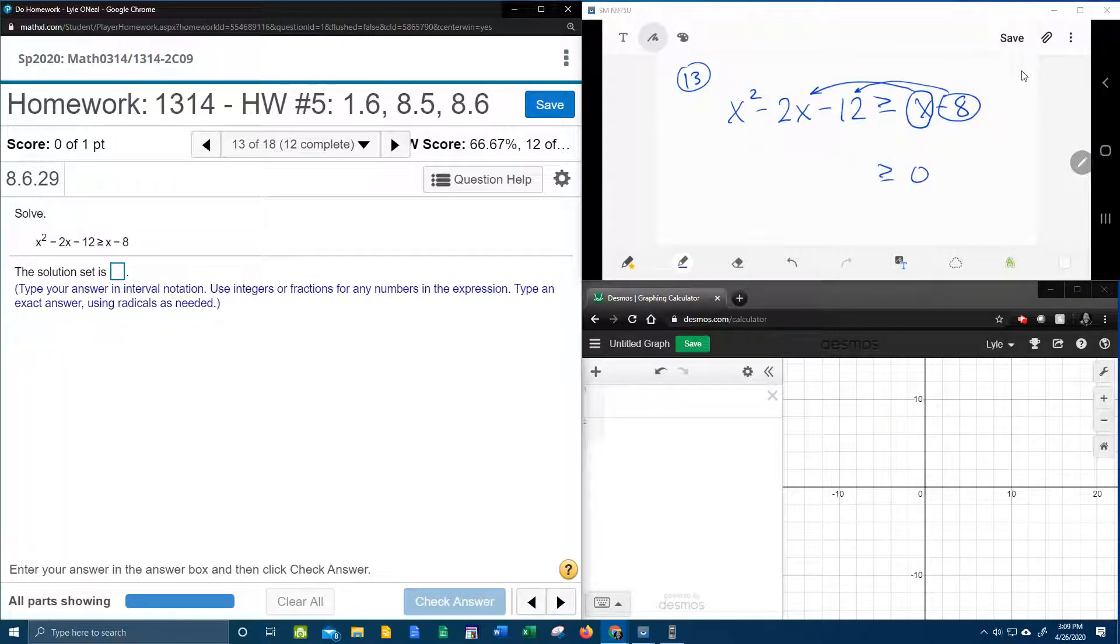So when the x comes over, it's going to make negative x, combining with negative 2x to give negative 3x. The negative 8 is going to come over and make a plus 8, that's going to combine with negative 12, and that's going to give negative 4. 8 minus 12 is negative 4.